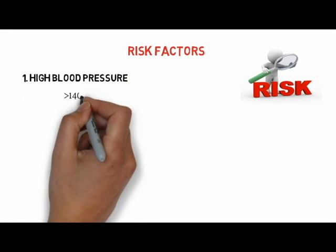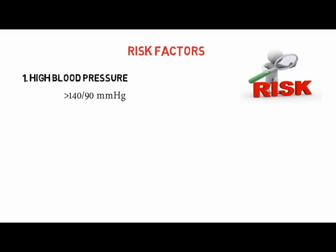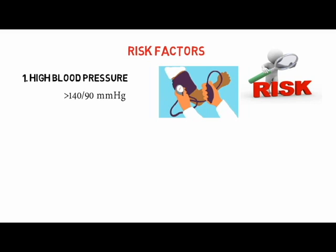Blood pressure of 140/90 mmHg or higher is the most important risk factor for stroke. It usually has no specific symptoms and no early warning signs, which is why it is important to have your blood pressure checked regularly. Controlling your blood pressure is crucial to stroke prevention.